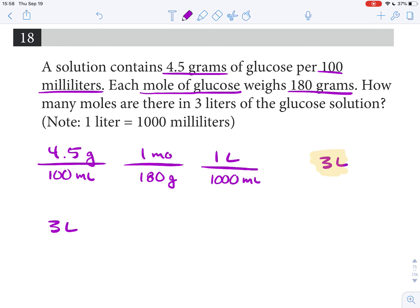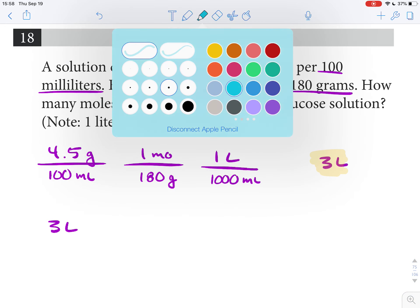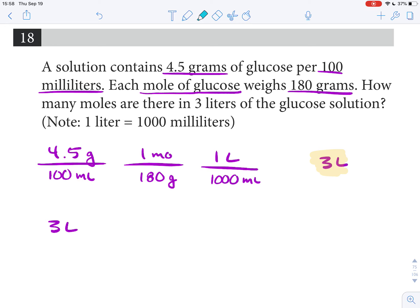We'll start with the 3 liters, and then we are going to find the conversion factor that has liters in it. We've got it - it's the liters to milliliters. Now the one thing that we're going to have to do is flip this. This is just a statement of equivalence.